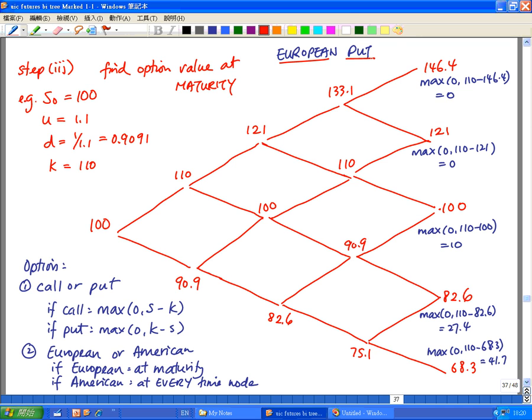In this case, let's look at the European put first. So this is also European, meaning it can only be exercised at the end of the fourth step. So here also, just like the European call, I only apply this formula, the maximum of 0, k minus s, on the very end of step 4. I do not apply this formula in the earlier nodes because for European option, it can only be used or exercised at the end.